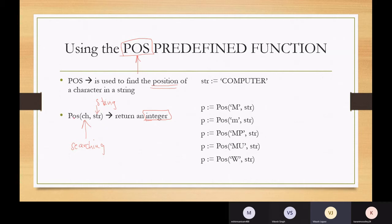So Pos will find the position of a character in a string. It has two parameters. The first parameter is the character you're searching for. The second parameter is the string you're searching in.